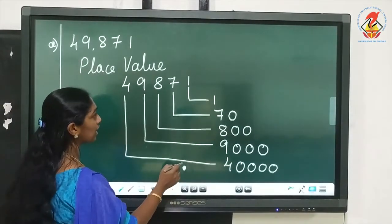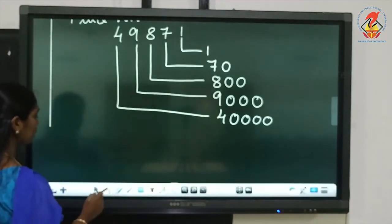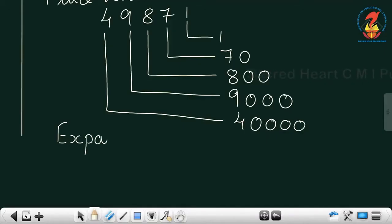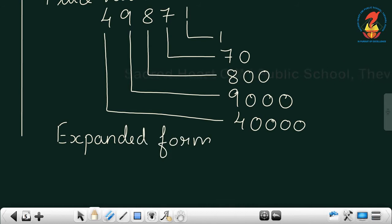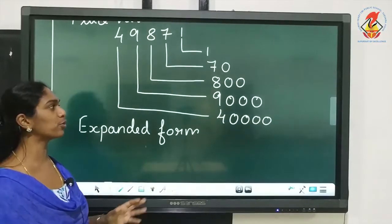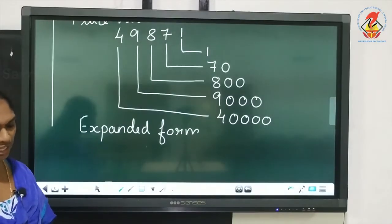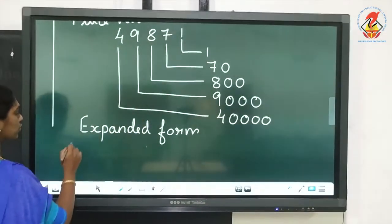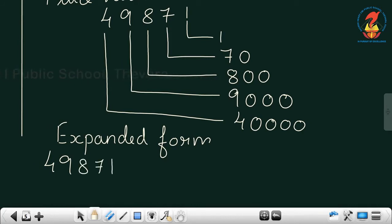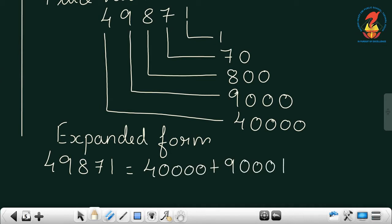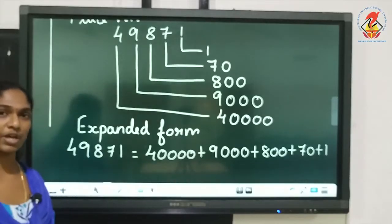Now I am going to write the same number in expanded form. To write in expanded form, you take the place value of each digit. So 49,871 in expanded form is: 40,000 + 9,000 + 800 + 70 + 1. This is how you write it in expanded form.